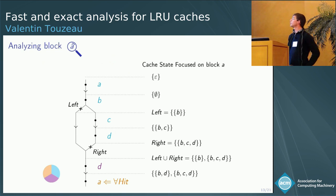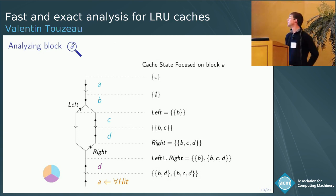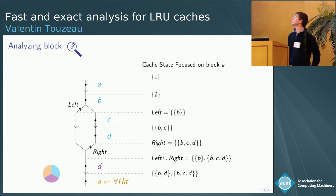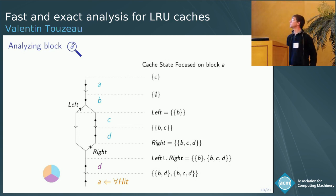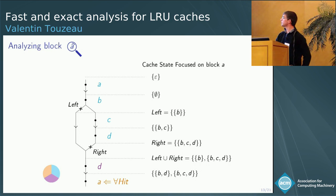Here is an example of how the model checker approach performs on a small example. Basically all accesses except the last one are already classified by the pre-analysis as may, must, or definitely unknown. We want to classify the last access to A. Starting from an empty cache (represented by epsilon), we first access A, so it is the most recently used block with no blocks younger than it. When we access other blocks, we simply add them to the possible younger sets. When different paths join, we keep the union of all possible younger sets. In the end, this tells us that A is always a hit.